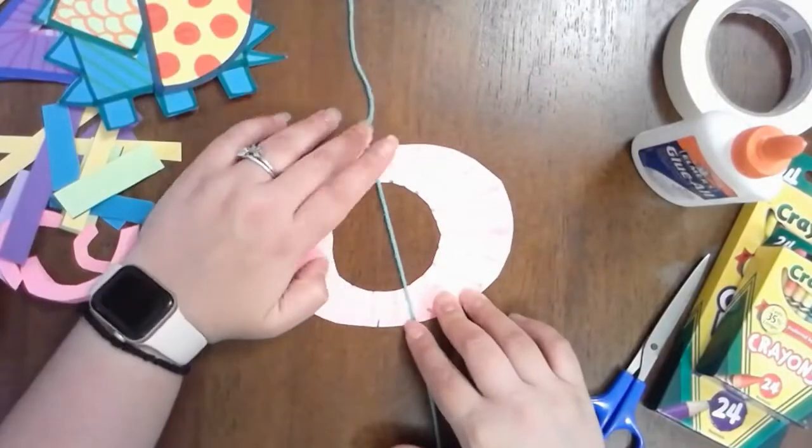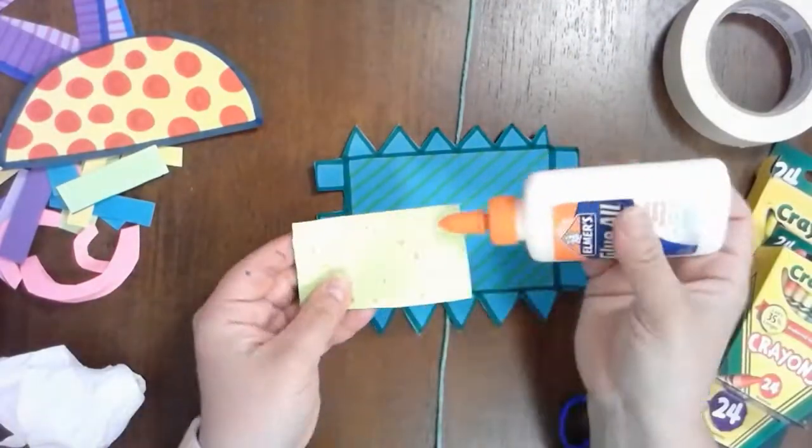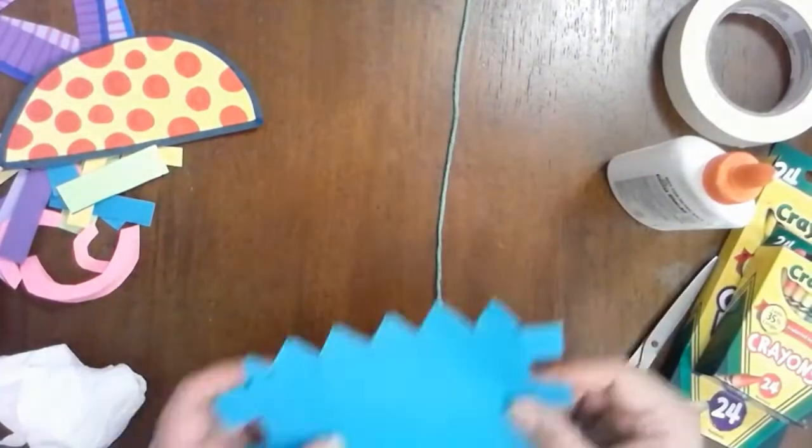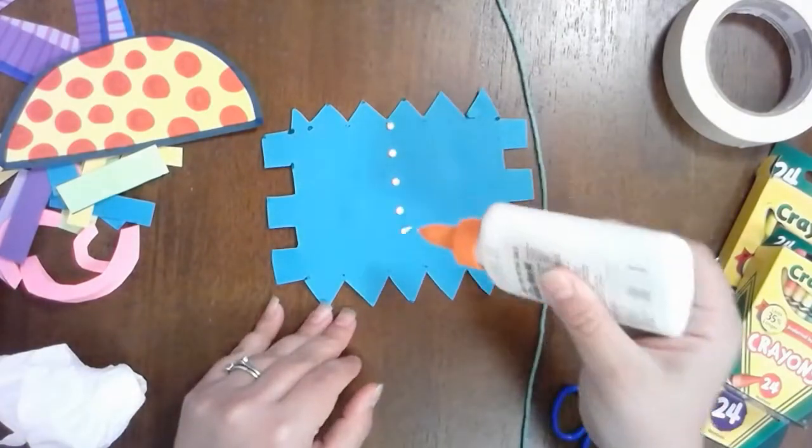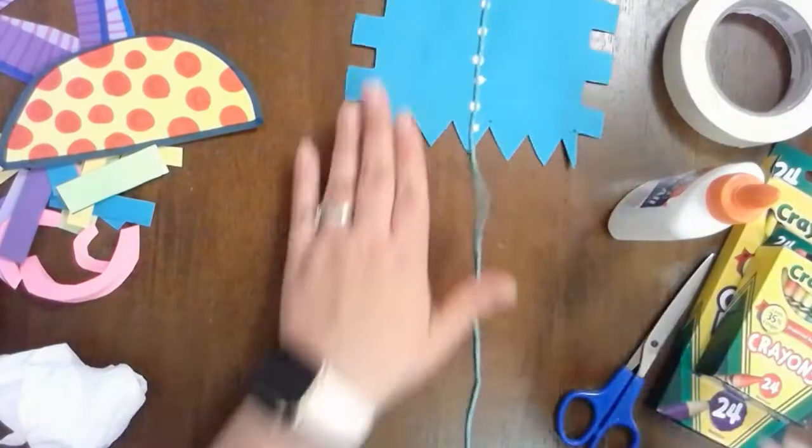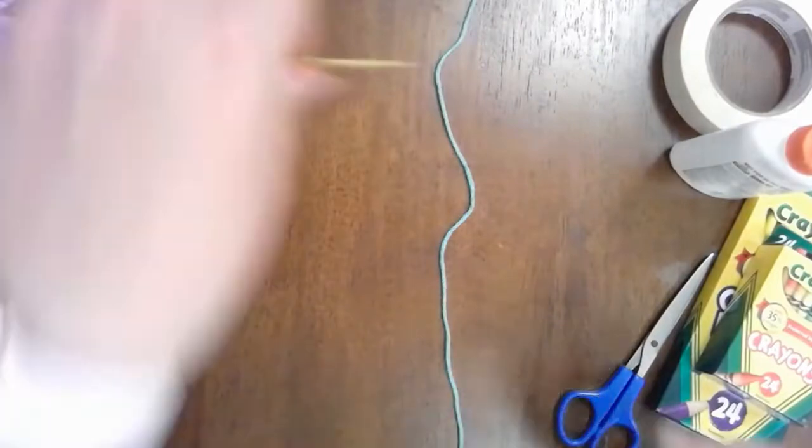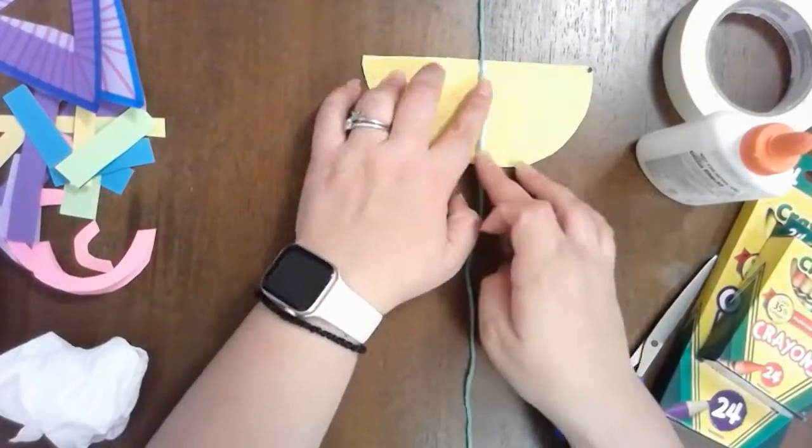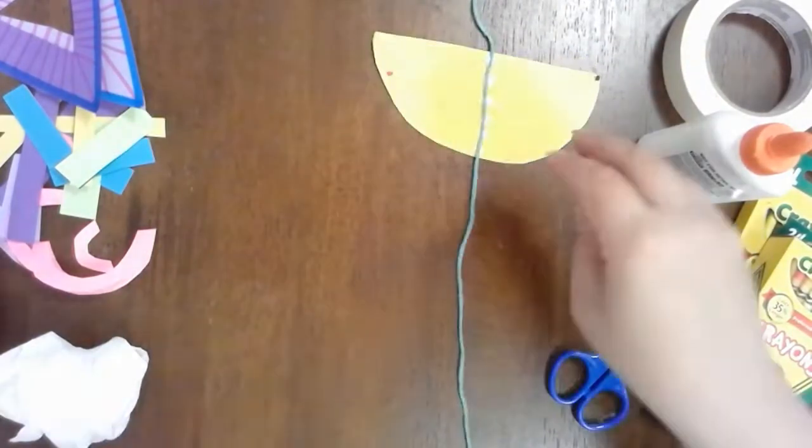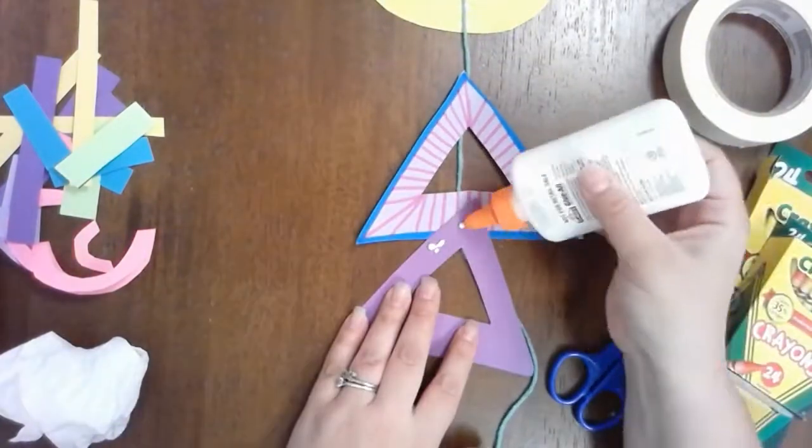Once you're done cutting out all your shapes and putting on all those designs, you're then going to start gluing it onto your string. Now remember, you want to make sure that you have the bottom of your pieces facing up, so that you can glue the string to the back of these pieces.